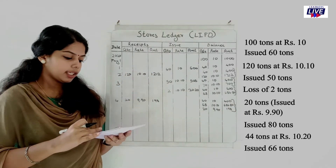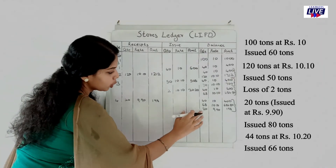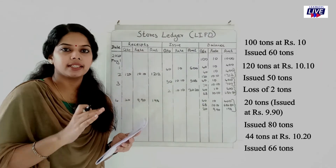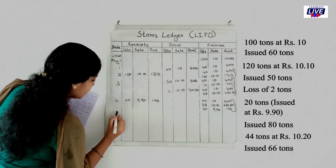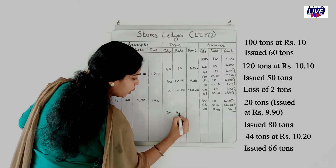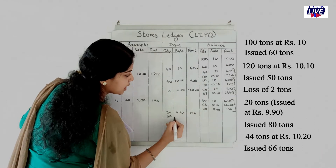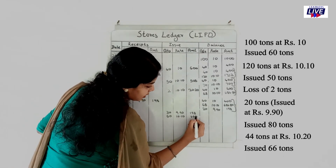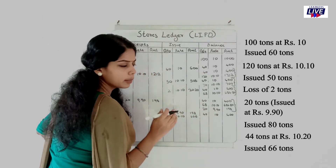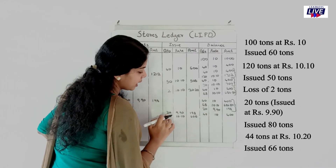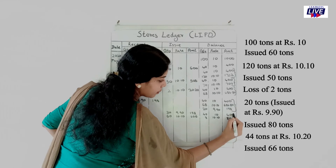Fifth entry — issued 80 tons. Under LIFO, we take from the latest consignment first. Issue 20 tons at 9.90, amount 198; then 60 tons at 10.10, amount 606. Total issue 80 tons. Balance: 40 tons at 10 rupees (400) and 8 tons at 10.10 remain.